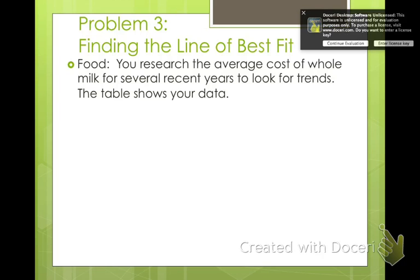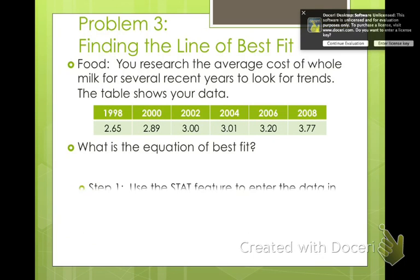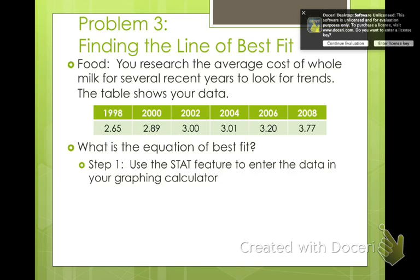Alright. You can also use your calculator to find trend lines for you. If we're given this data to find an equation of best fit, you're going to use your graphing calculator. Go to the stat feature and enter the data using your calculator. You're going to put into Y1 these values, and this is going to be 1, 2, 3, 4, 5, 6. Don't do the years. And then this is going to be your Y2. So go ahead and plug in that data.